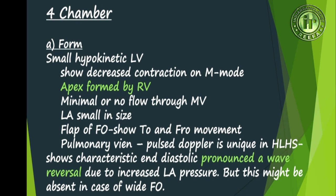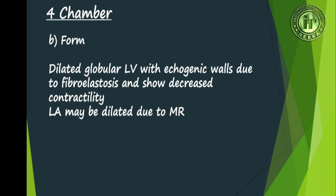The pulmonary vein will show reversal of flow. On pulse Doppler there is a characteristic end-diastolic pronounced A-wave reversal due to increased LA pressure, though this may be absent in the case of a wide foramen ovale. In the second form there is a dilated globular left ventricle with echogenic walls due to fibroelastosis and decreased contractility. This is a sequelae of aortic stenosis progressing to critical aortic stenosis with no forward flow, and the LA may be dilated due to mitral regurgitation.